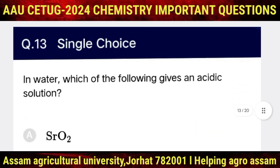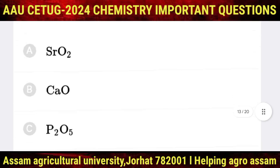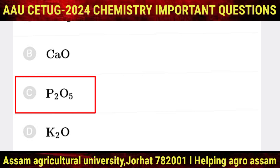Question number 13: in water, which of the following gives an acidic solution? Options are SrO2, CaO, P2O5, and K2O. The correct option is C, that is P2O5.